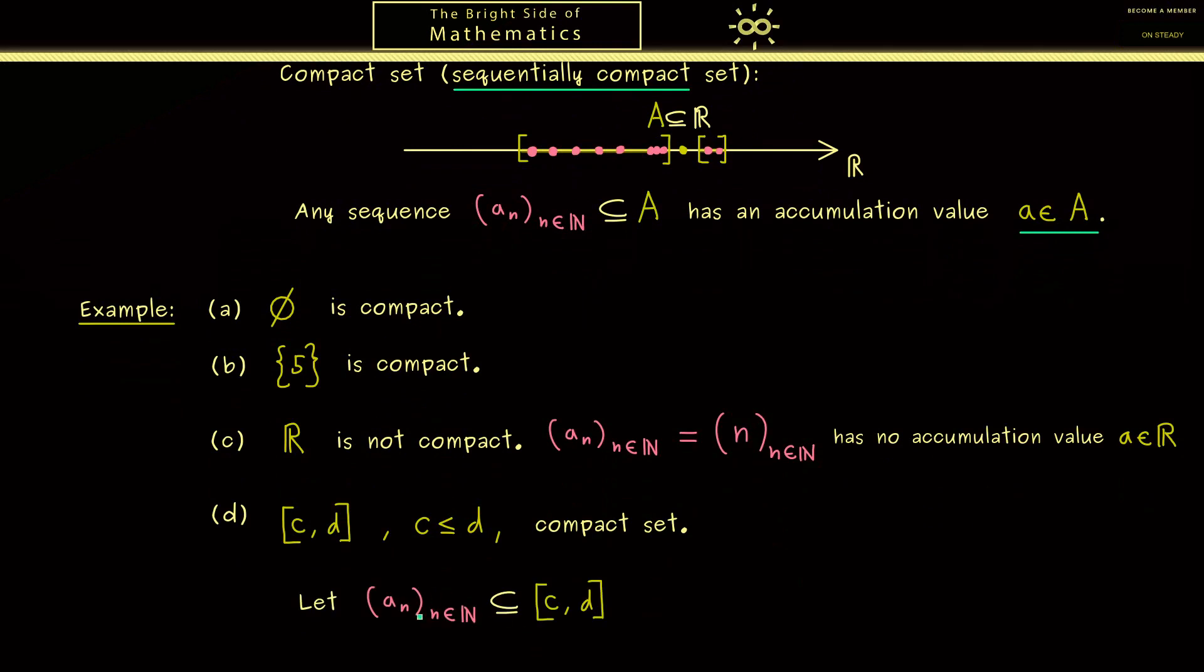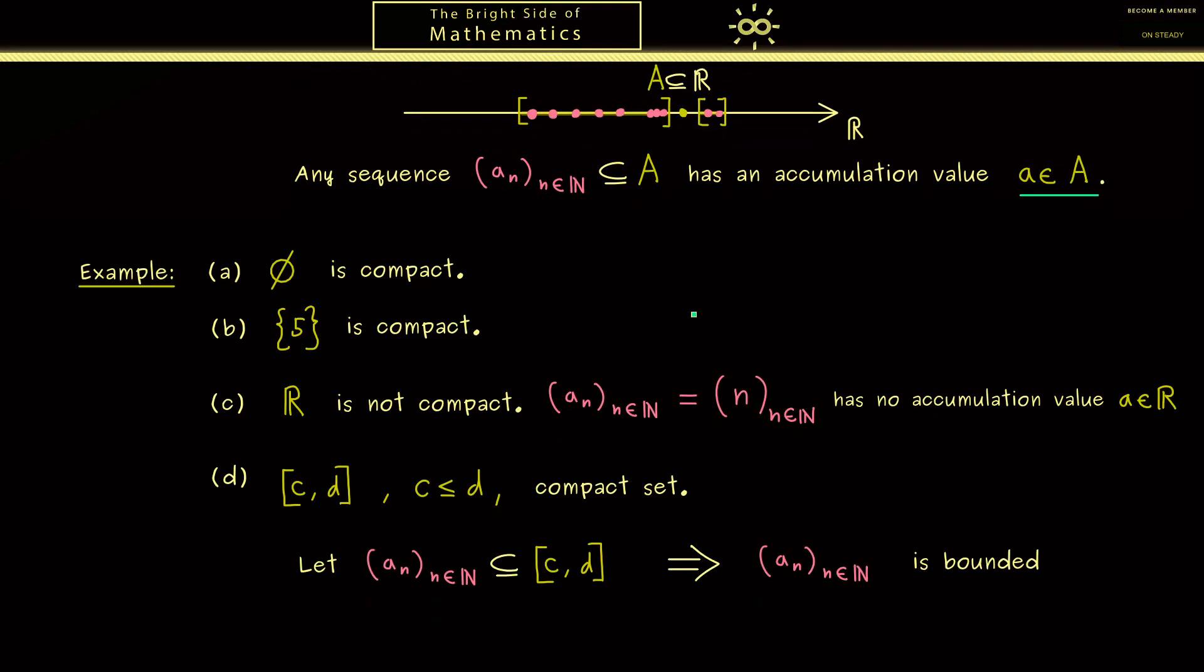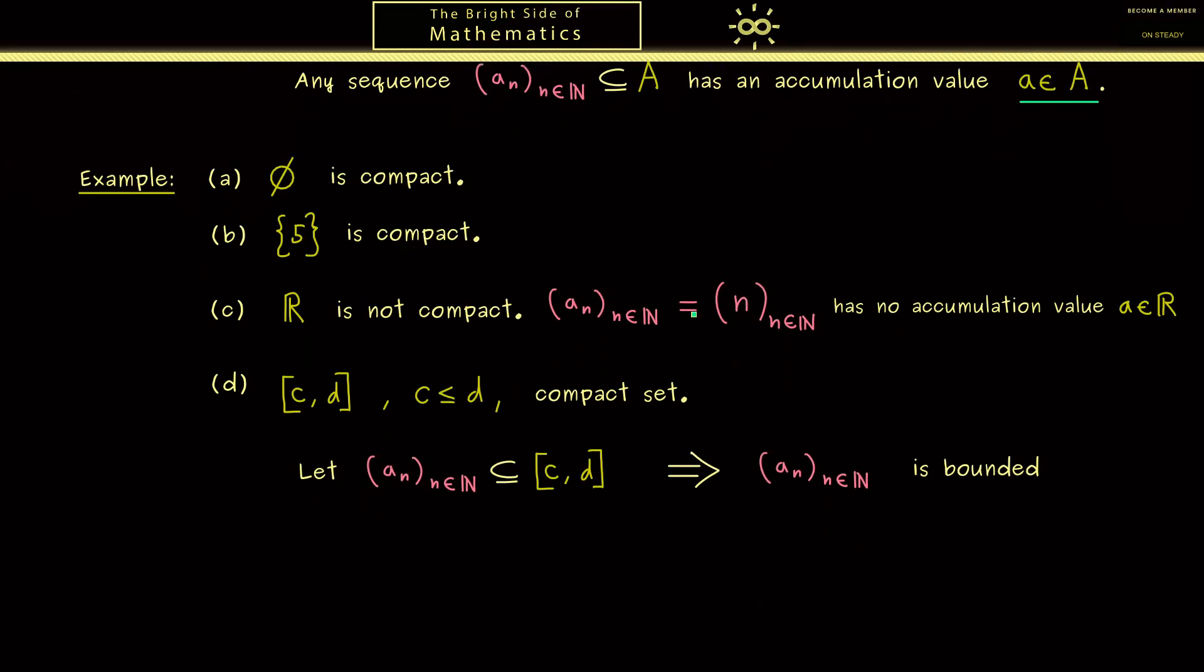For this let's assume we have a sequence with members inside this interval. Hence we can immediately conclude that this sequence is bounded from above and bounded from below. In short we say the sequence is bounded. However now you know we can apply a very famous theorem. Namely the Bolzano-Weierstrass theorem for sequences. It tells us that a bounded sequence has at least one accumulation value. And this one we can call a and we know it's a real number.